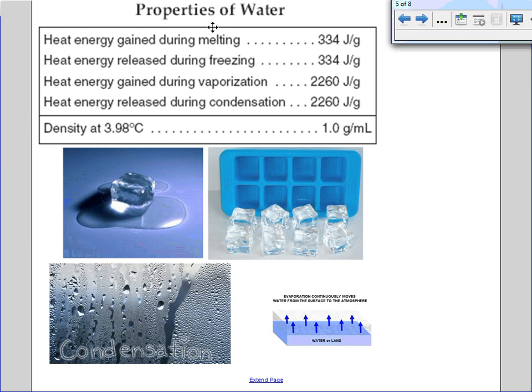Here we have the properties of water. You can find this on the front page or the first page of your reference table. Basically it describes how much energy is needed for water to go through the different phases of matter. At the top, the first one is heat energy gained during melting.